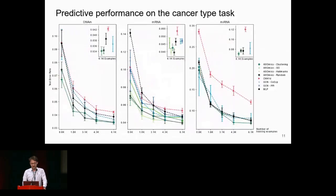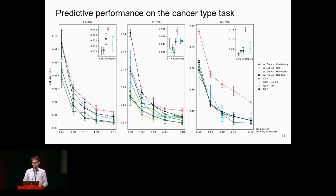The AttOmics architecture was trained on TCGA data with weighted cross-entropy to account for class imbalance. We tested different models: AttOmics in green, CNN in red, graph neural networks in blue, and MLP in black, across three omics modalities: methylation, gene expression, and mRNA data. One observation is that CNN is the worst-performing model across all modalities, likely because the convolutional window is too restrictive to extract sufficient information from omics profiles.